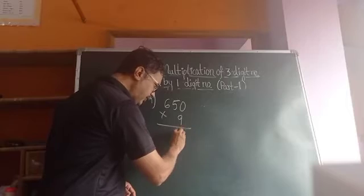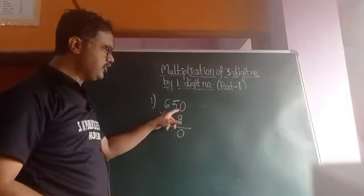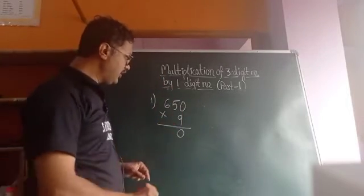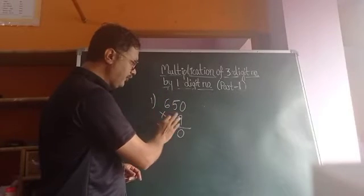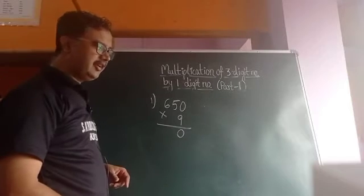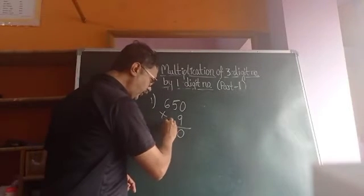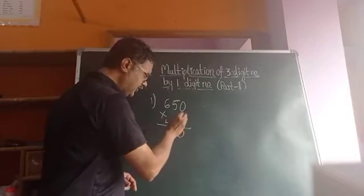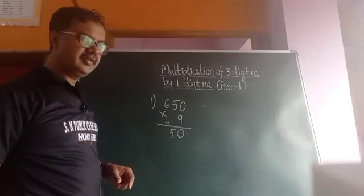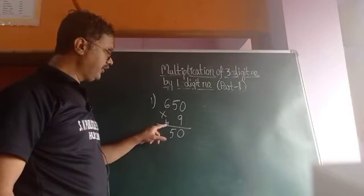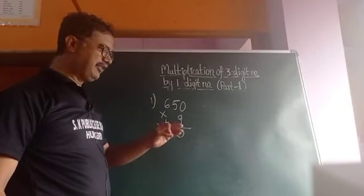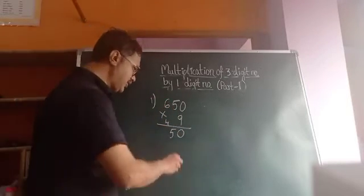First example: 650 into 9. When 0 is there, you have to start with it: 0 into 9 is 0, write 0. Then 9 into 5 is 45, write 5 carry 4. Then 9 into 6 is 54, plus 4 carry is 58. So the answer is 5850.